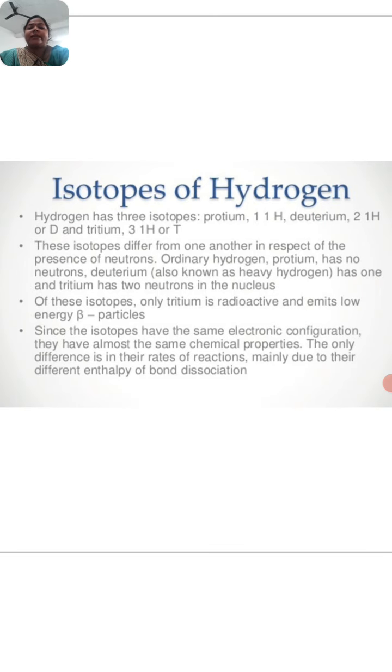Of these isotopes only tritium is radioactive and emits low energy beta particles. Since the isotopes have the same electronic configuration, they have almost the same chemical properties. The only difference is in their rates of reaction mainly due to their different enthalpy of bond dissociation. Their electronic configuration is similar, there are no changes there. The difference comes in the rate of reaction and mainly due to their different enthalpy of bond dissociation.